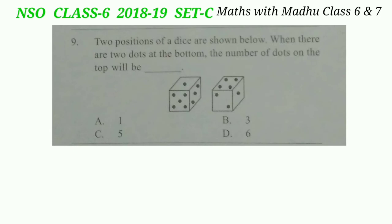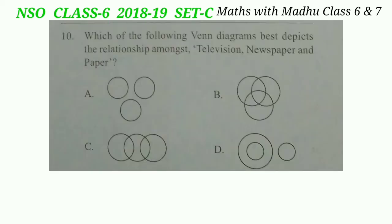Question 9: two positions of a dice are shown. When there are two dots at the bottom, the number of dots on the top will be dash. The number of dots on opposite faces are 1–6, 2–3, and 4–5. So the correct answer will be option B, that is 3 — there are three dots at the top.